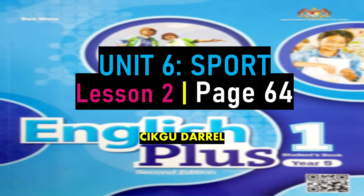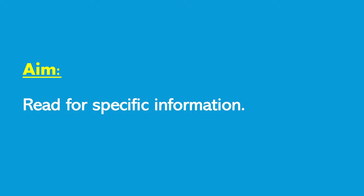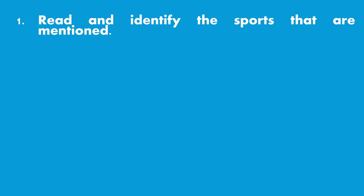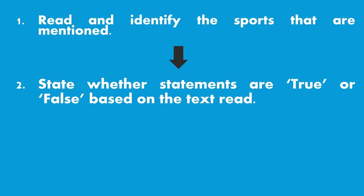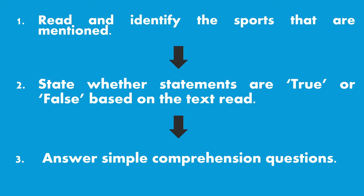For your information, this is going to be the second lesson, which will be on page 64 of your student's book. At the end of this lesson, you should be able to read for specific information. Let me communicate the framework of our lesson: first, we shall read and identify the sports that are mentioned; after that we shall state whether statements are true or false; and finally, we are going to answer some simple comprehension questions together.